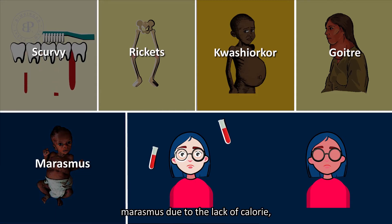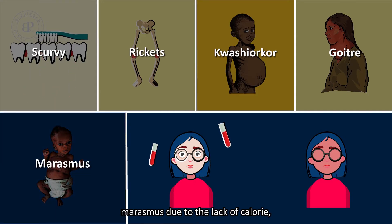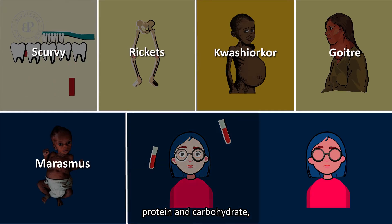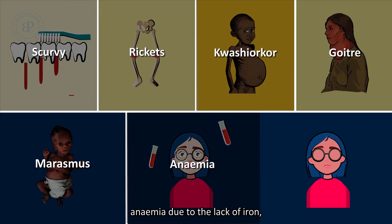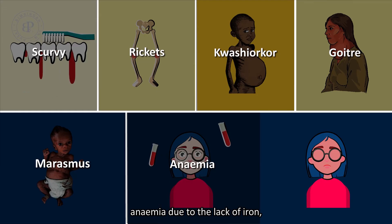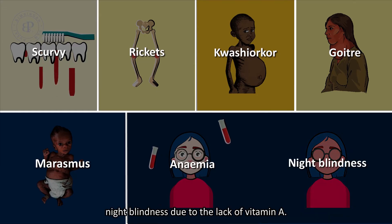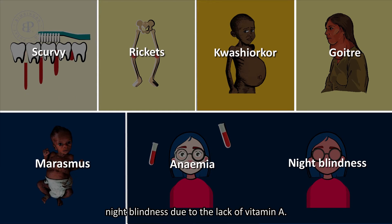Marasmus, due to the lack of calories, protein, and carbohydrate. Anemia, due to the lack of iron. Night blindness, due to the lack of vitamin A.